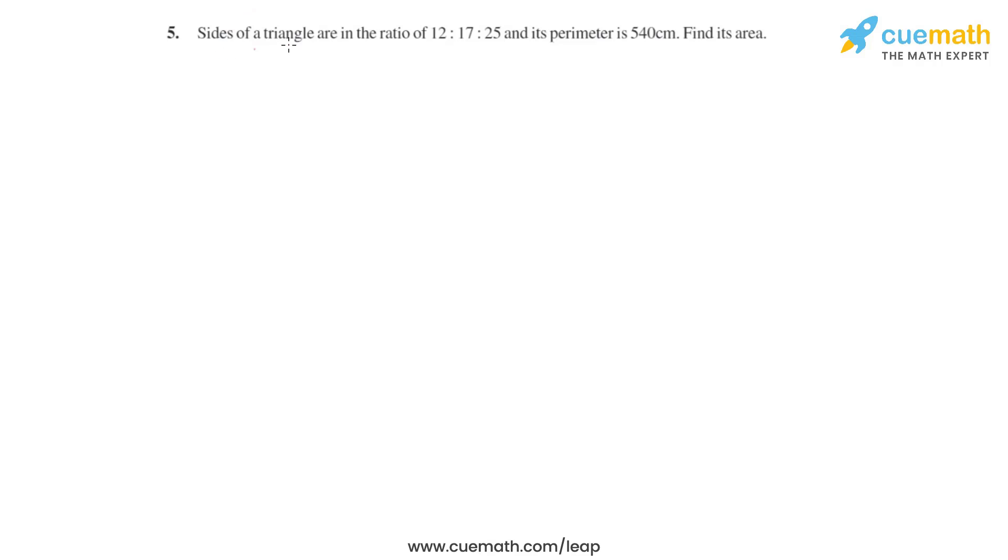Question number 5 says that the sides of the triangle are in the ratio 12 is to 17 is to 25 and its perimeter is 540 centimeters. We have to find the area of this triangle.